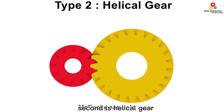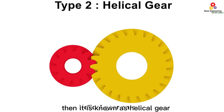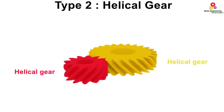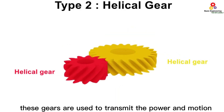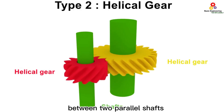Second is helical gear. The gear whose teeth are inclined to the axis is known as helical gear. These gears are used to transmit power and motion between two parallel shafts.